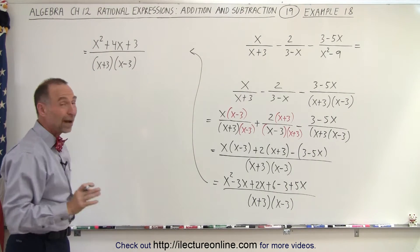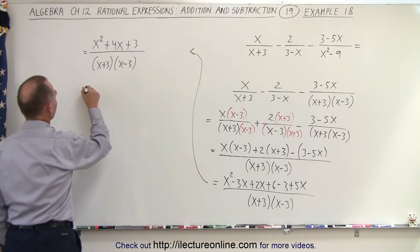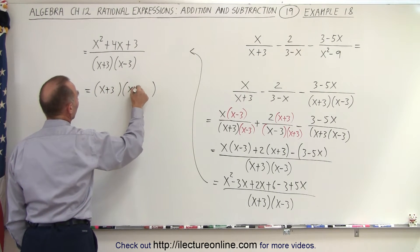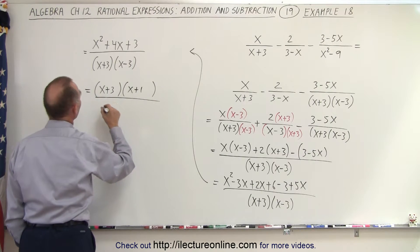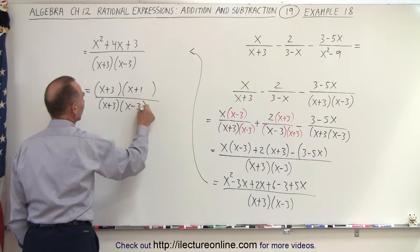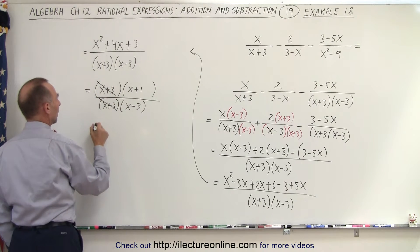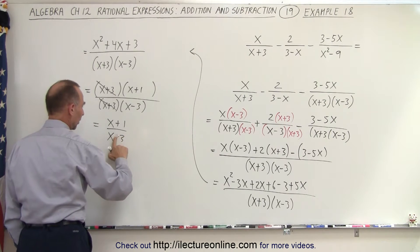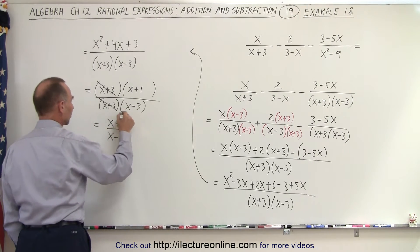And now I believe we can factor the numerator. This can be written as x plus 3, x plus 1, all divided by x plus 3 times x minus 3. And then clearly these two cancel. And we're left with x plus 1 over x minus 3.